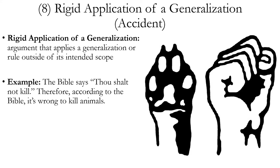Now, keep in mind: the fact that this argument is a fallacy does not prove the conclusion is false. Maybe it really is wrong to kill animals, but it's not wrong to kill animals for this reason. This is a rule that, even if valid, is supposed to apply to humans only.